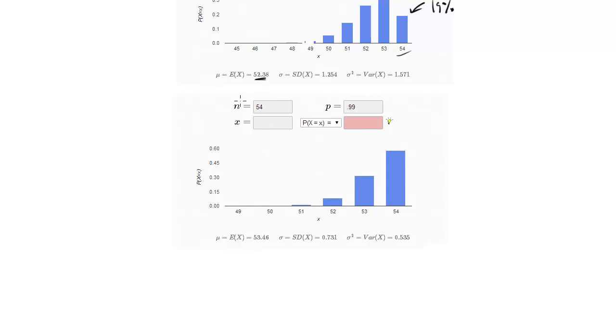Let's up the ante one more time, and again, you can go to the link in the description and play with it yourself. If you're 99% accurate, so you only get one out of 100 math questions wrong on average, your chances of getting a 54 are the highest. Notice it's the highest peak,